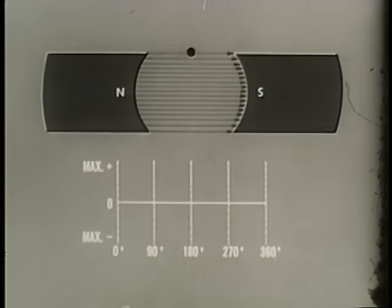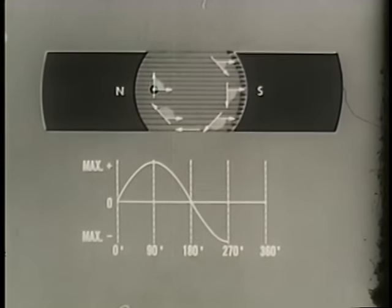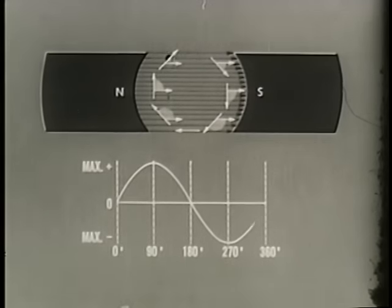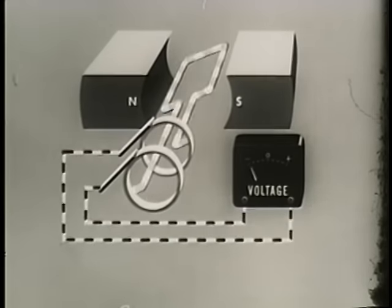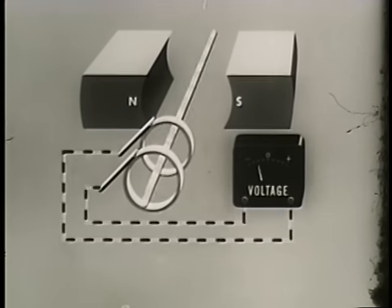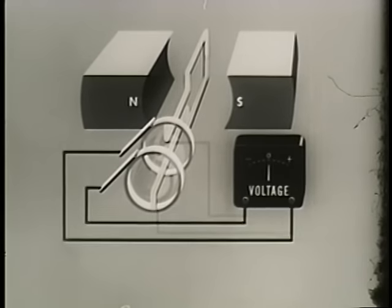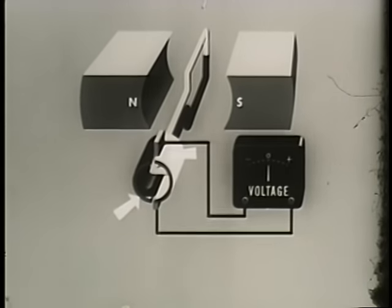A graph of EMF versus conductor position during one revolution will be a sine wave representing alternating current or AC. All rotary generators produce AC internally. What you have seen so far is really the theory and operation of a basic AC generator. But our purpose was to explain the principles of operation of a DC generator. To get direct current, we will attach each end of the conductor to a segment of copper forming a commutator. Now our machine is a DC generator.